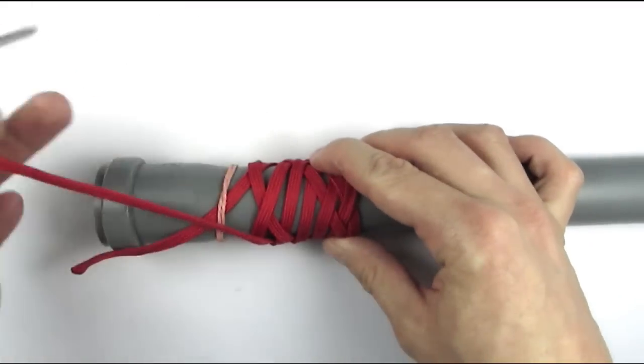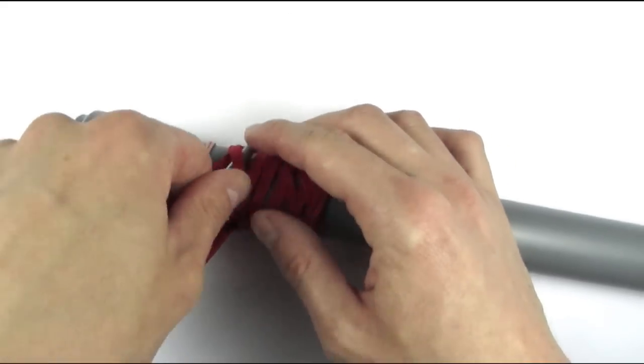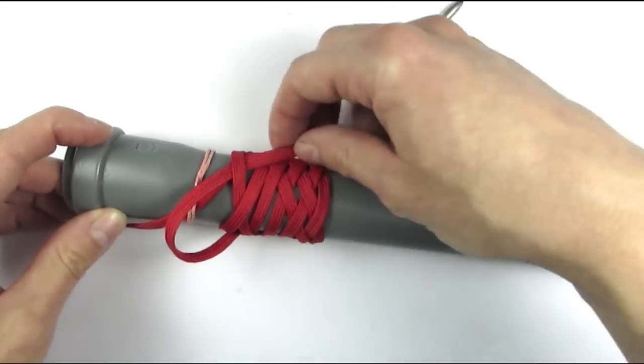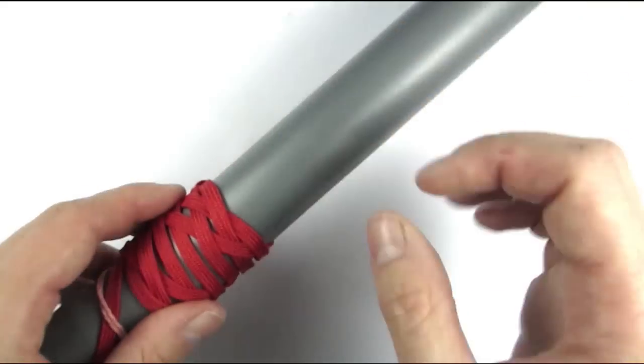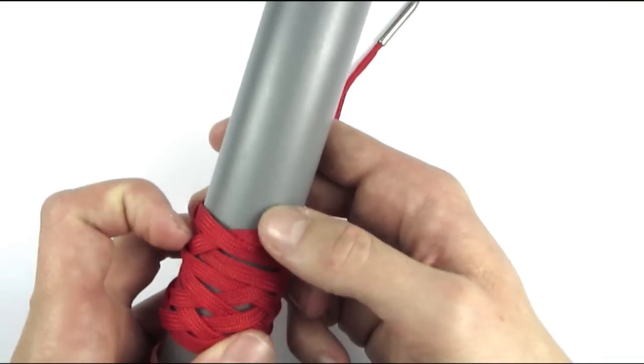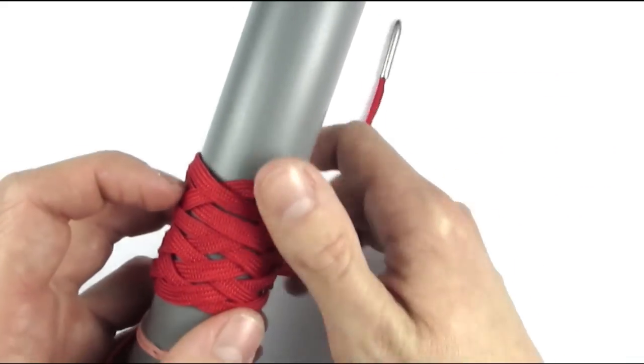We have now reached the standing end and we finish by placing our cord next to the standing end. And with this we have our 4-bight turk's head ready for any project that we want to do with it.